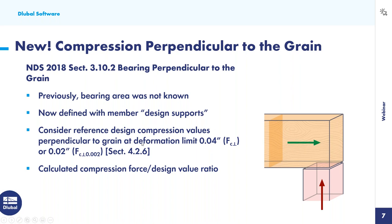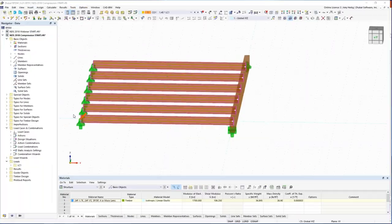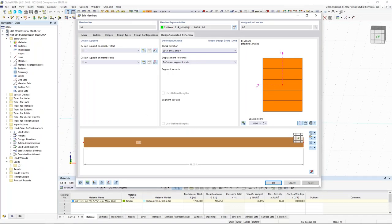Per NDS Section 4.2.6, the reference design compression values perpendicular to the grain depend on the member's material. The NDS limits deformation to 0.04 inches to establish the design compression value. Alternatively, for less deformation — say 0.02 inches — the code specifies using 73% of the 0.04-inch design value. This selection is required within the program under the design support settings. Refer to NDS Section 4.2.6 for more detail. Ultimately, the program now gives you this check in the NDS design results, calculating the compression force to design value ratio.